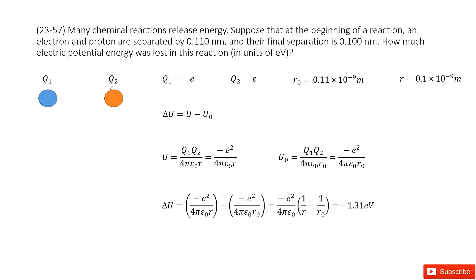This is Q1 and Q2. Q1 carries one negative unit charge and Q2 carries one positive fundamental charge. Initially the distance is 0.11 nanometer. Final distance is 0.1 nanometer. I ask you how much electric potential energy was lost in this case.